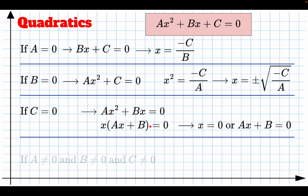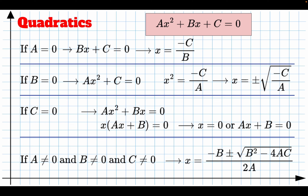The last case is when a, b, and c are all non-zero. If all three are non-zero, you have to use the quadratic formula and grind through it. We only need the full quadratic formula when a, b, and c are all non-zero; if any one is zero, we can solve it an easier way.